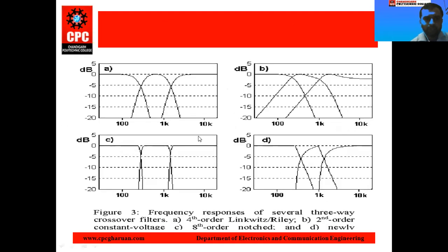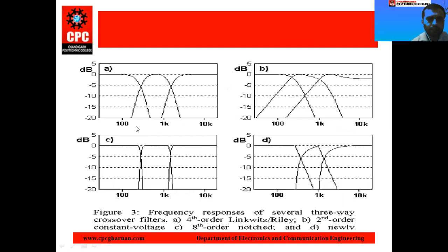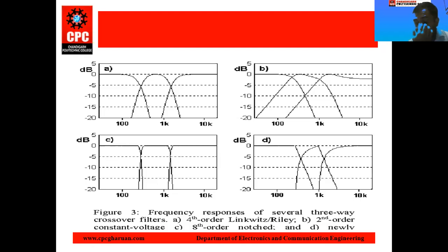This is the frequency response of the multi-way speaker, which includes tweeter, midrange, and woofer. The woofer is used for the low frequency range, then the midrange frequency range, and then the high frequency range. This is the tweeter frequency, this is the midrange frequency, and this is the low frequency. Due to that, the gain is stable at every frequency. Therefore, the frequency response of the multi-way speaker is maximum as compared to other loudspeakers.